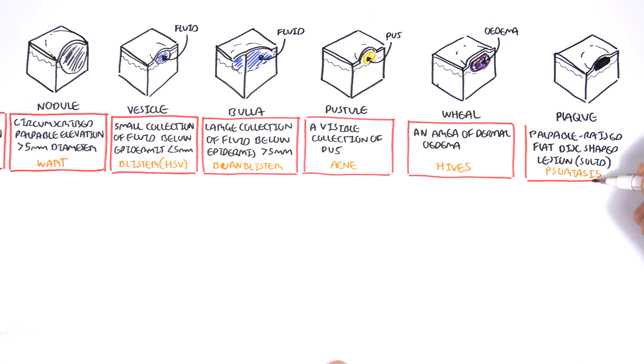A plaque is a palpable raised flat disc-shaped lesion, and it's often solid. An example of a plaque lesion can be seen in psoriasis.